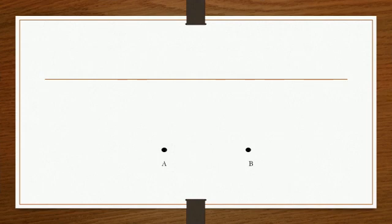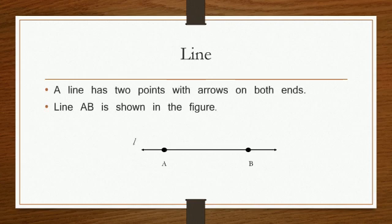Join two distinct points A and B taken on a sheet of paper by a ruler and extend on either sides of A and B. We get a line. A line is also named using a small letter L. A line is a set of infinite number of points. A line has no specific length.